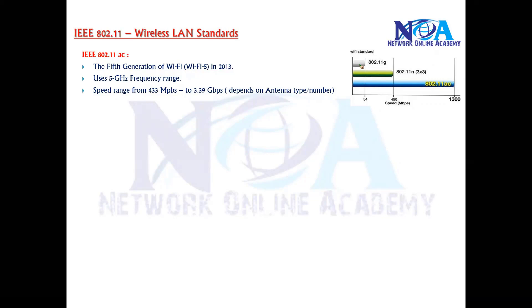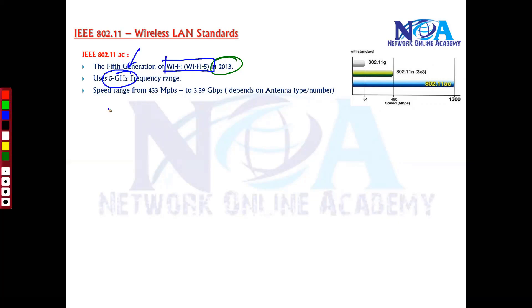The next standard is 802.11ac. This standard was introduced in 2013 and is also labeled as Wi-Fi 5 — the fifth generation of Wi-Fi. This standard operates on the frequency range of 5 gigahertz. Comparing it with previous standards, the throughput is more scalable and provides more throughput than before.